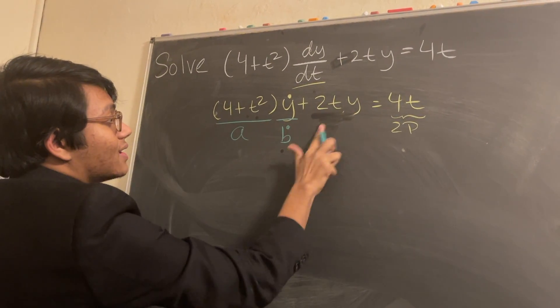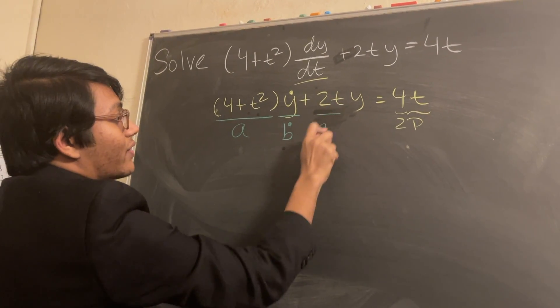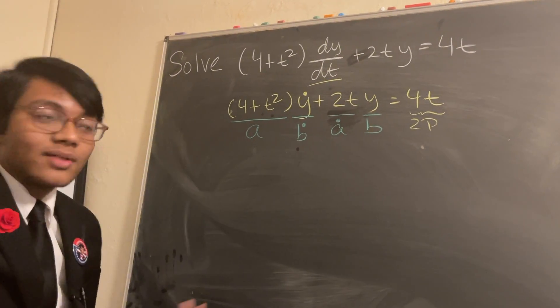So here we have the opposite. Here we have the derivative of a times b, and that's just the product rule.